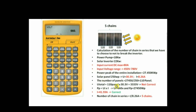We enter the power peak of the installation, which is 27.45 kilowatt-peak. Click on Kilo, then Volt-Ampere. As you can see, we have 27.45 kilowatt-peak entered. Now we click on Amps to calculate the current. The result is 41.59 amps, which is correct because it does not exceed the inverter's maximum input DC current of 80 amps.